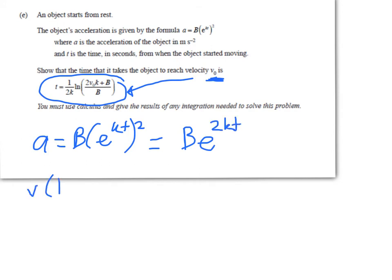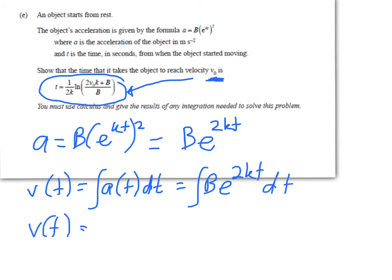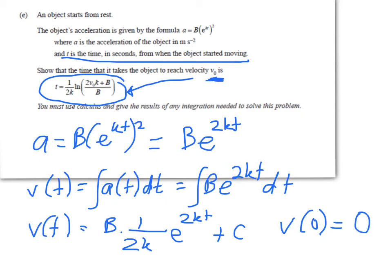First, a equals Be^(2kt). How do I get velocity? Velocity comes from anti-differentiating acceleration. We get v(t) equals B times (1/2k)e^(2kt) + c. We need some more information. We know t is the time from when the object started moving, so it started moving at time 0. So v(0) = 0, and we'll use that to solve for the constant.